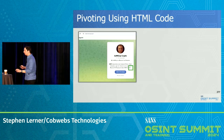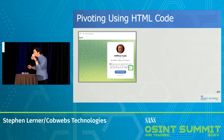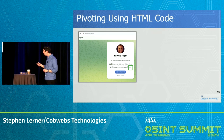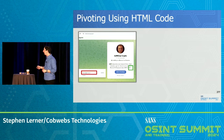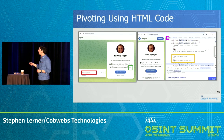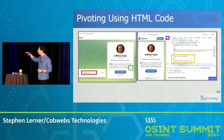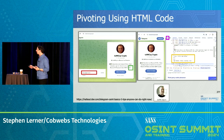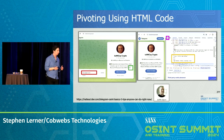Pivoting using HTML code: if you are not a member of a group or channel and there's a large description you can't see, click on the three dots, right-click on the page, inspect page element, and you'll be able to see the entire description. This can link out to a Linktree where you can pivot off additional platforms. This technique is from Griffin Glenn.